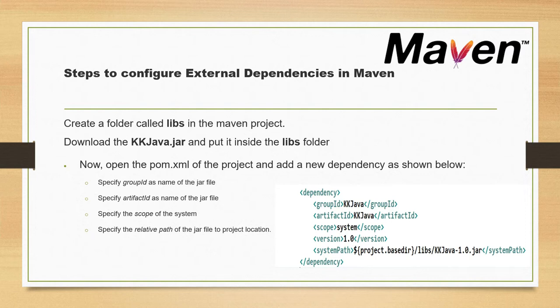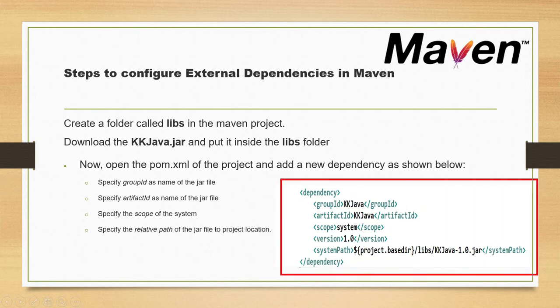Next, open pom.xml in your project and add a new dependency. Inside the dependencies section, add a dependency tag and specify a groupId - same as the jar name - and specify the artifactId, also the same as the jar name. Very importantly, you need to specify the scope as 'system'. You also specify the version, and you need to provide the relative path of your jar within the project. The system path would be: project base directory, then the 'leaves' folder, then the jar file.